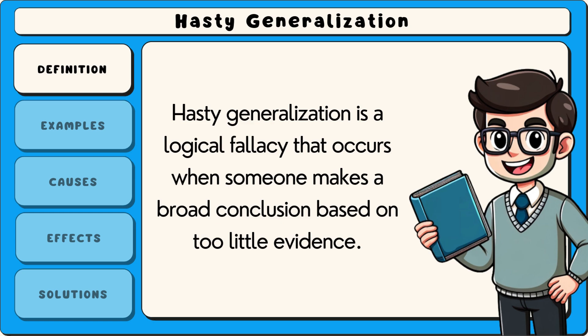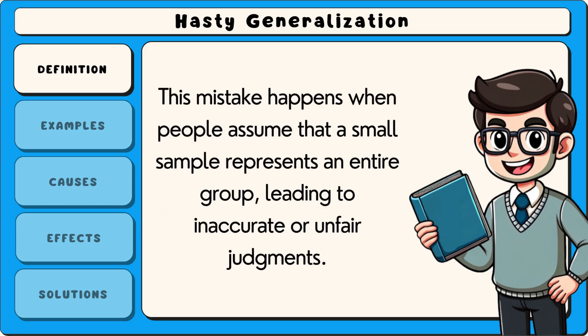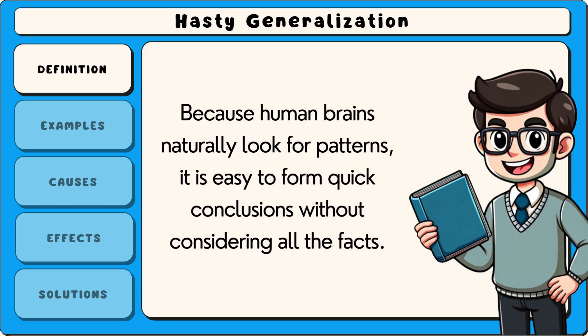Hasty generalization is a logical fallacy that occurs when someone makes a broad conclusion based on too little evidence. This mistake happens when people assume that a small sample represents an entire group, leading to inaccurate or unfair judgments. Because human brains naturally look for patterns, it is easy to form quick conclusions without considering all the facts.